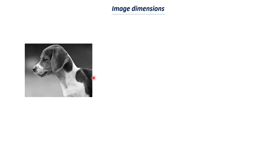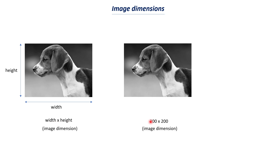The first thing we need to understand is image dimensions. Let's say we have a dog image — we can represent this image's dimension as width and height. So this image has some particular width and some height, and we represent image dimensions as width × height. For example, this image has a dimension of 200 × 200. You can check images on your laptop or phone by going to properties. This basically means your width is 200 and your height is 200, and these 200 × 200 represent the pixels of this image.